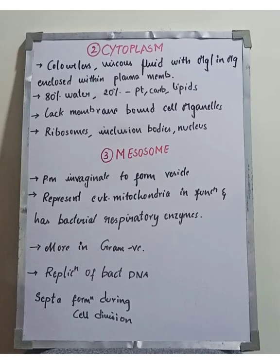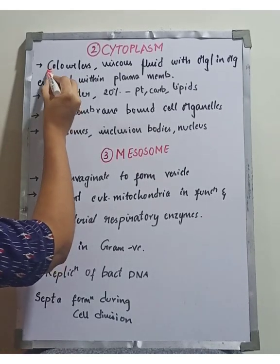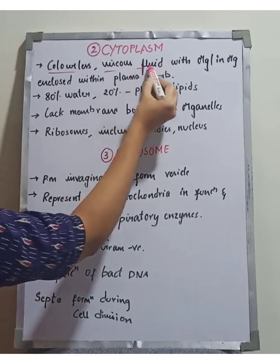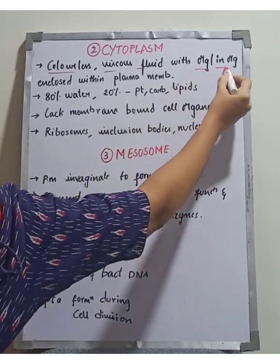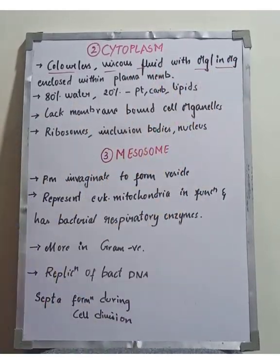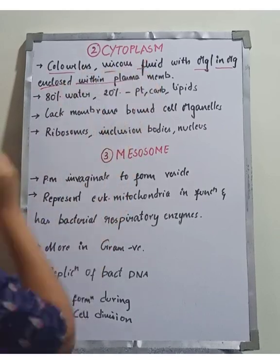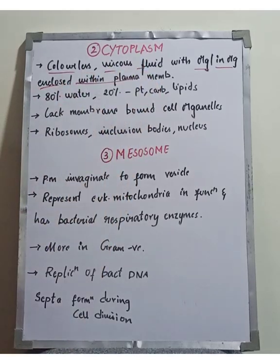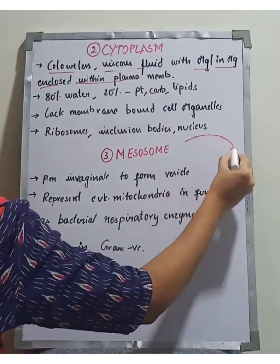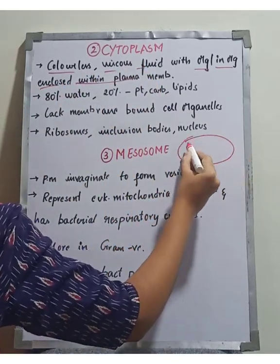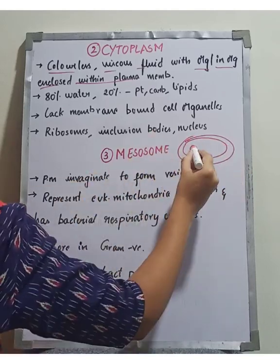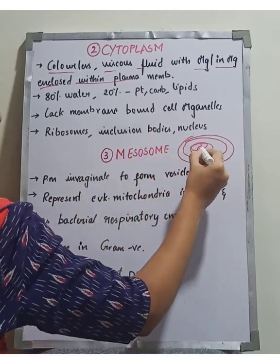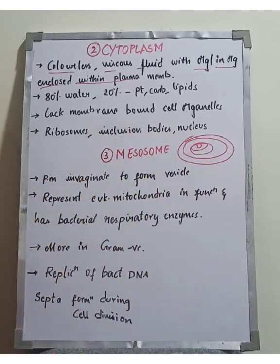The second internal structure is cytoplasm. Cytoplasm is a colorless, viscous fluid with organic and inorganic components enclosed within the plasma membrane. The fluid between the inner and outer membranes is the cytoplasm.